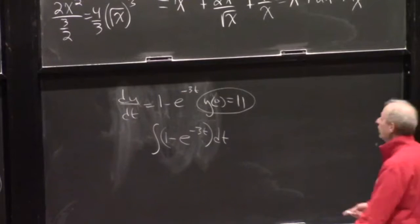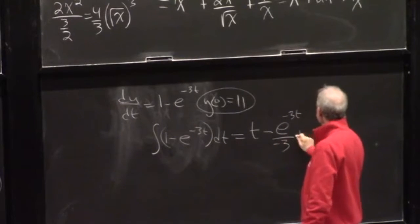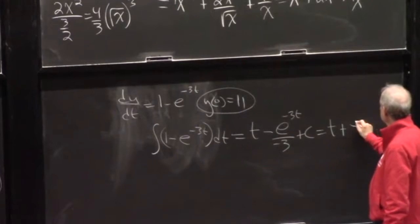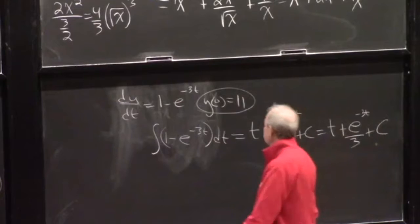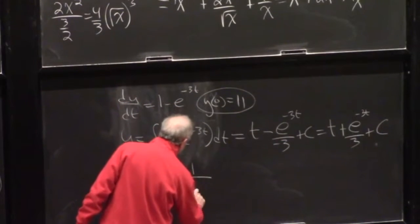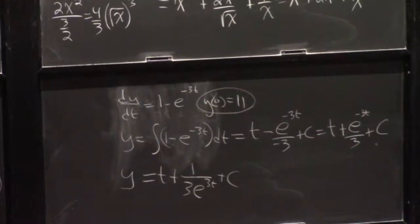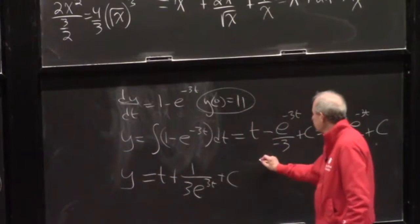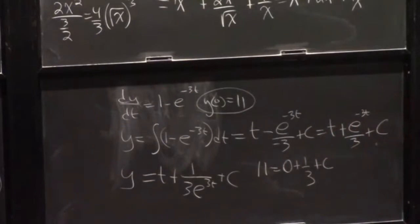The integral of 1 is t. The integral of e to the minus 3t is e to the minus 3t over negative 3, which simplifies to t plus e to the minus 3t over 3 plus a constant. Remember e to the minus 3t means 1 over e to the positive 3t, so y = t + 1/(3e^(3t)) + C. We know y(0) = 11, so 11 = 0 + 1/3 + C, giving C = 32/3.